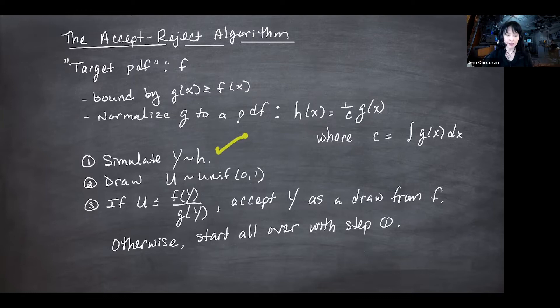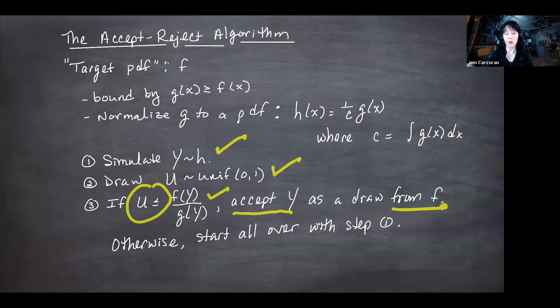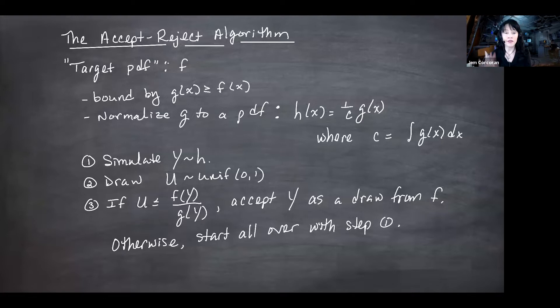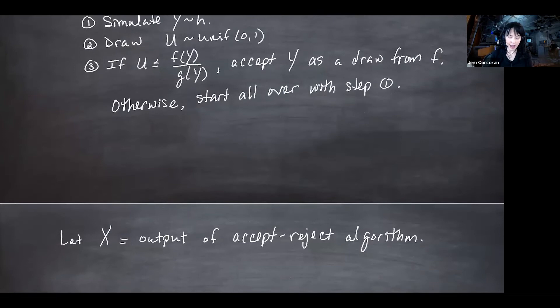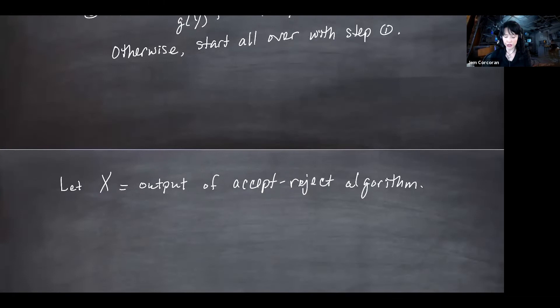All the Y's and U's are independent of each other; within each run, Y and U are supposed to be independent, and starting over is totally independent. To prove this works, let X be the output — the first accepted Y — and we want to show that the PDF of the output is actually f. In the continuous case, the probability that X equals x is always zero, so I start with the probability that X ≤ x, and want to show this equals the integral from minus infinity to x of f.